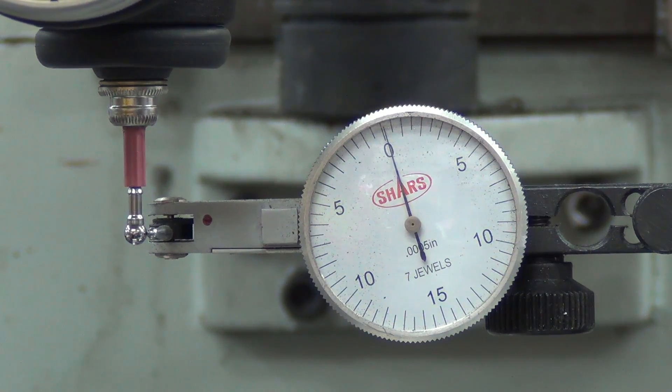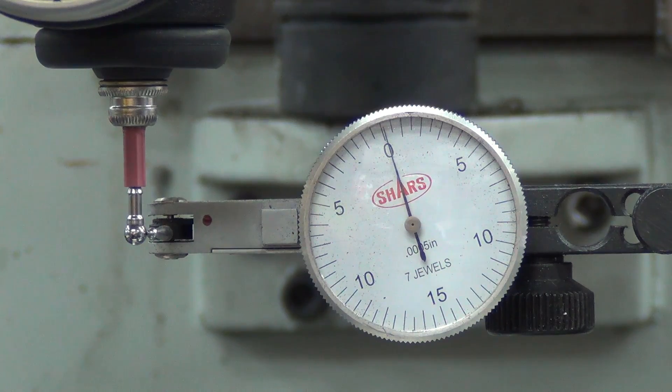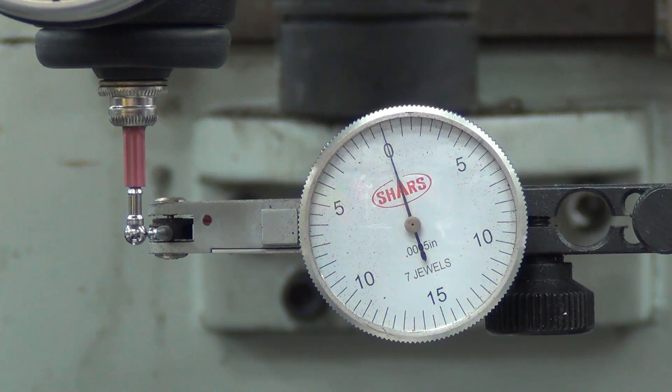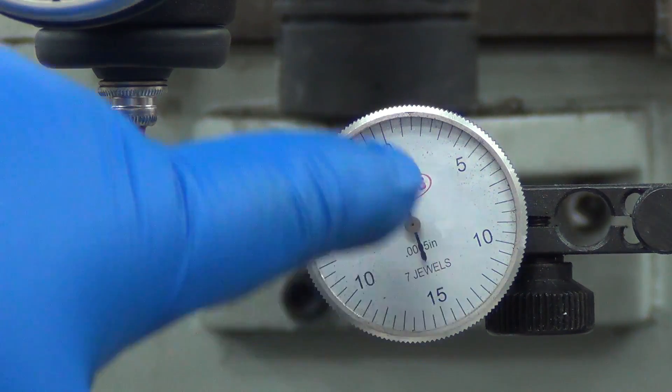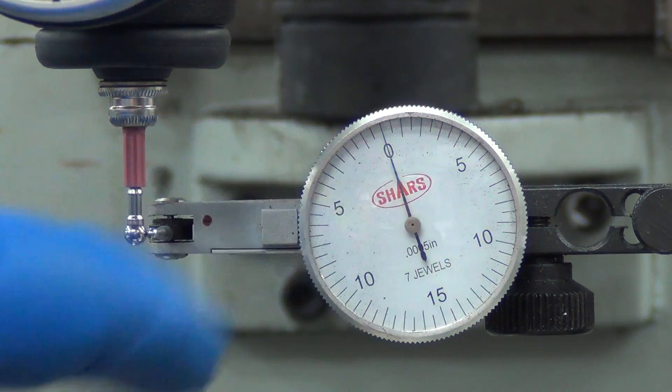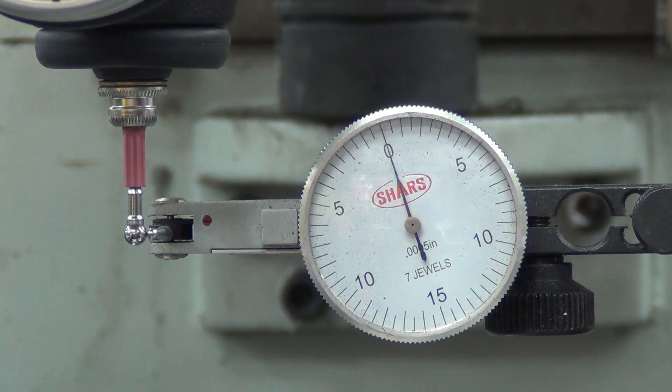Because each one of those increments is 0.01 millimeters. Wait, I'm looking at the deflection on here. Each one of these is a half-thou. So the center of that zero is roughly a half-thou wide, and I'm not even coming anywhere close to swinging to both sides on it. Anyway, Hamer's done.